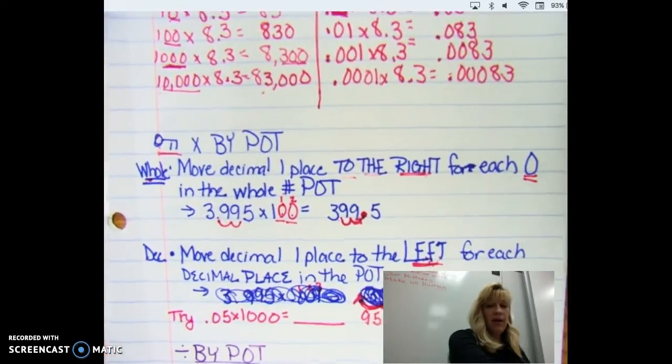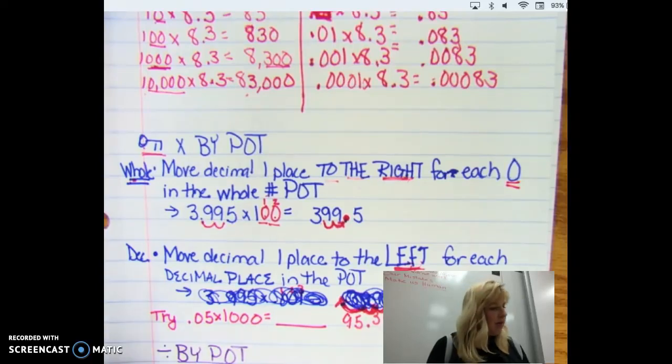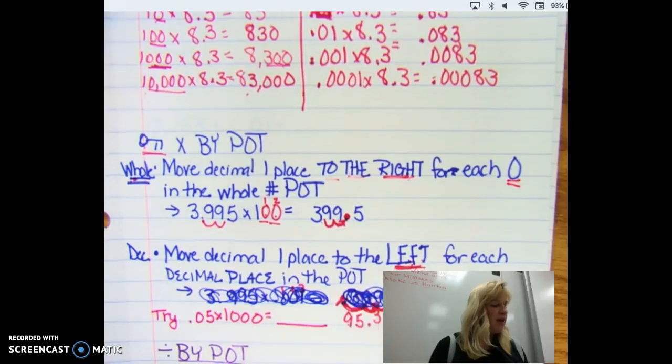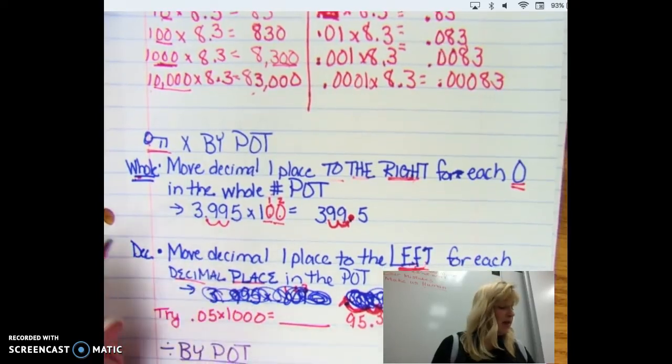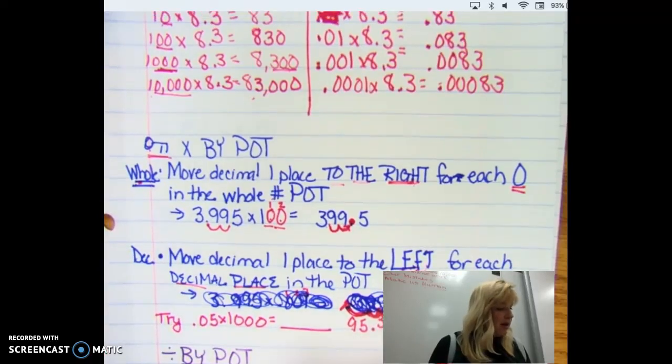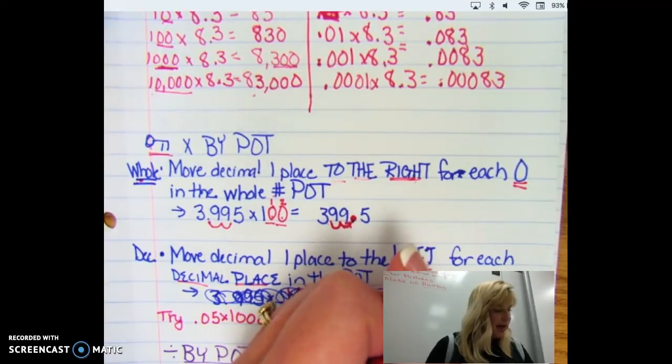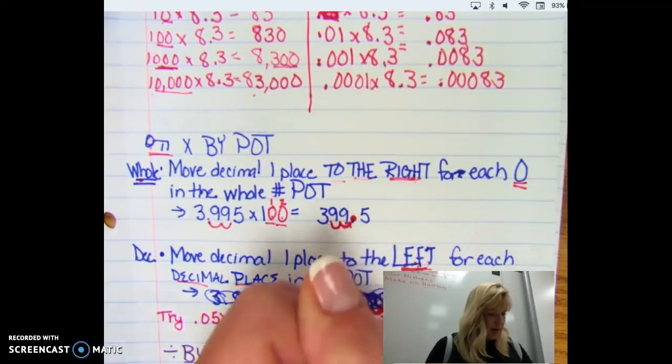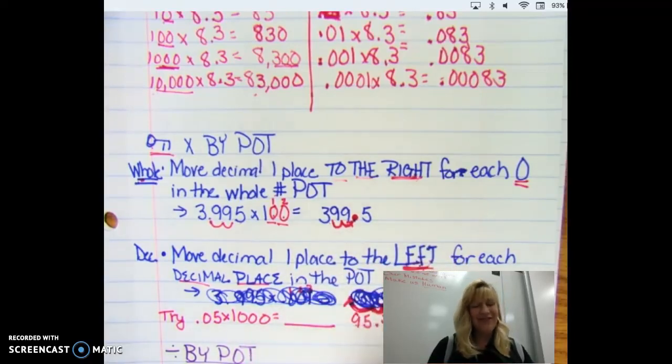When we are multiplying times a decimal power of 10, for instance 0.1, 0.01, 0.001, we are going to move the decimal place one to the left for each decimal place—not the number of zeros, how many decimal places in the power of 10. So if we have 399.5 times 0.001, we are going to move that decimal three to the left. So one, two, three. And that becomes 0.3995 or 3,995 ten-thousandths.